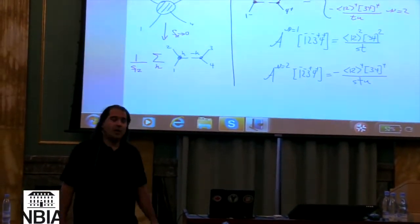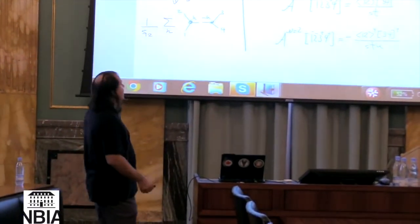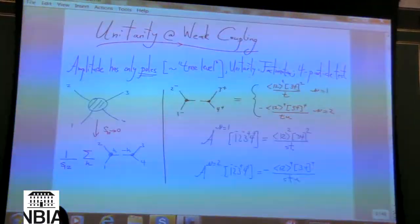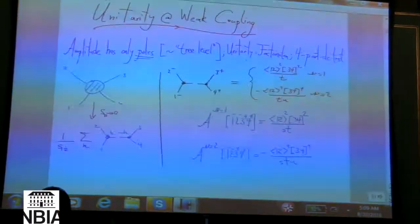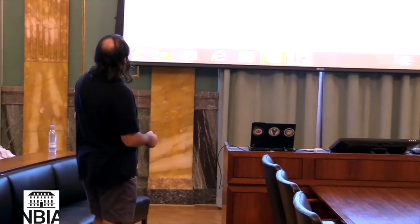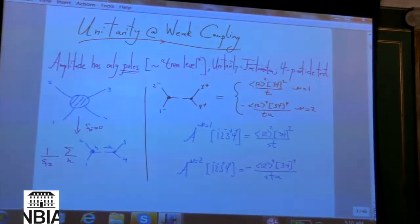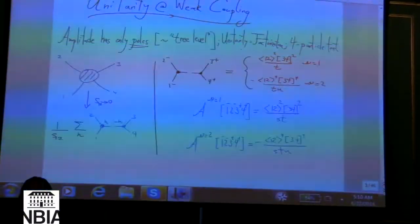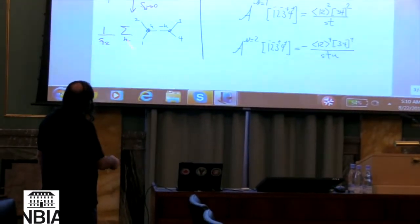We can move from kinematics to dynamics by asking for unitarity at weak coupling. The assumption of weak coupling is crucial — we imagine a limit where amplitudes have the simplest possible analytic structure, namely only poles. The simplest structure would be polynomials, but those are just contact interactions. For massless particles we expect poles, and the constraint is that the only poles by locality are when s, t, or u at four points goes to zero.